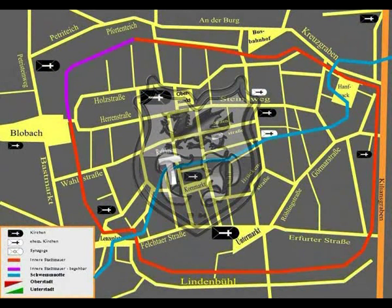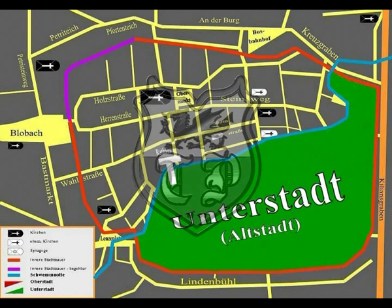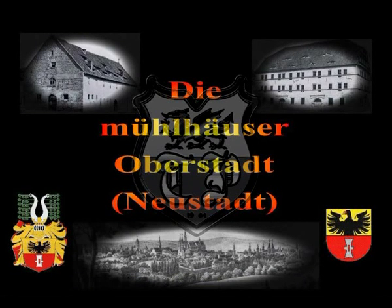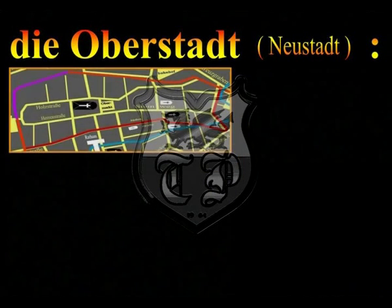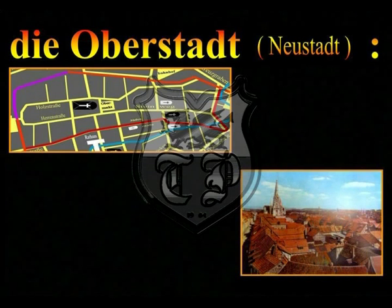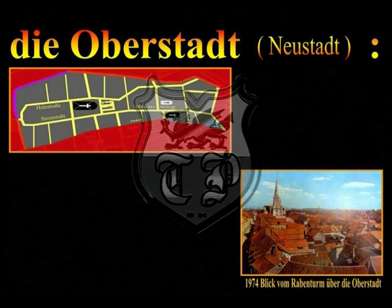Die Grenze zwischen Oberstadt und Unterstadt bildet die Schwemmnotte. Das einzige Gebäude auf ihrem Bachlauf ist das Mühlhäuser Rathaus. Auf der Karte ist das gesamte Innenstadtgebiet von Mühlhausen und die Aufteilung in Ober- und Unterstadt zu sehen. Der Einfachheit halber wurde die Grenze zwischen Ober- und Unterstadt etwas nach Norden verlegt. Die Karte links oben wird uns den ganzen Film hindurch begleiten; auf ihr zeigt ein kleiner blauer Stern, wo in der Oberstadt wir uns gerade befinden.